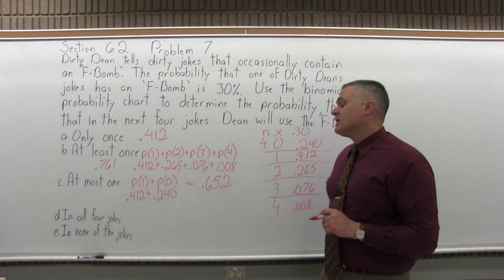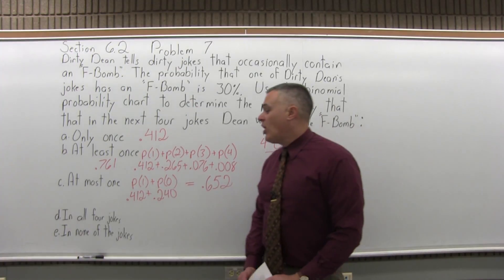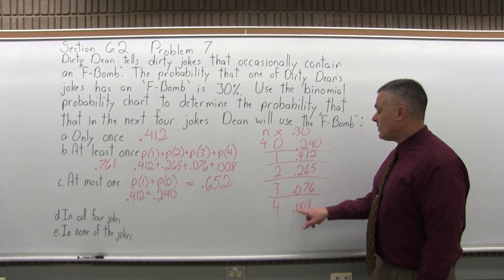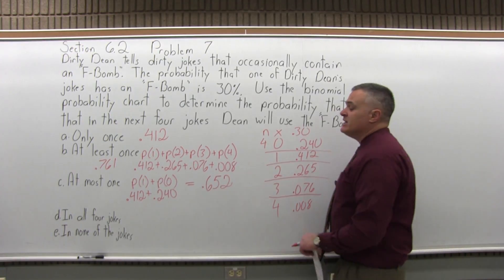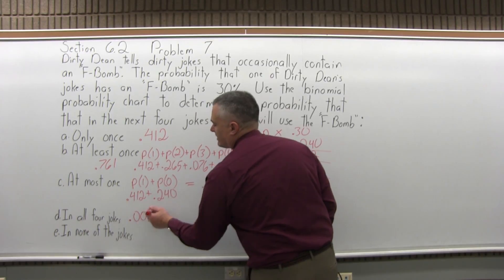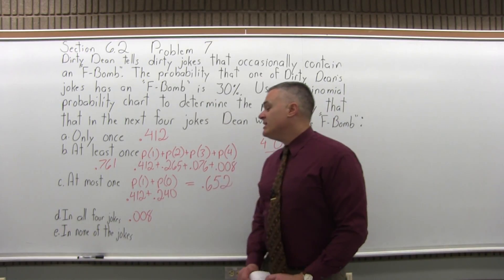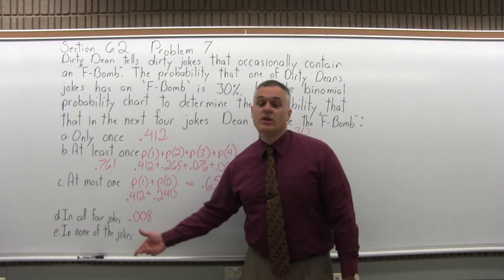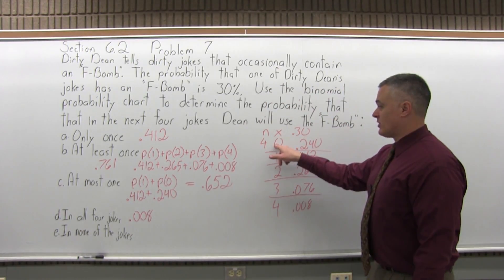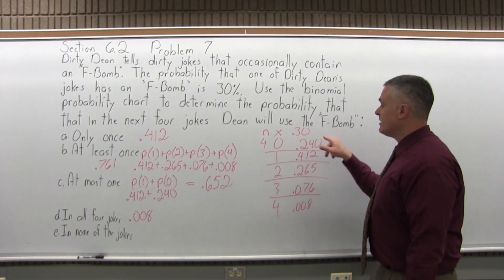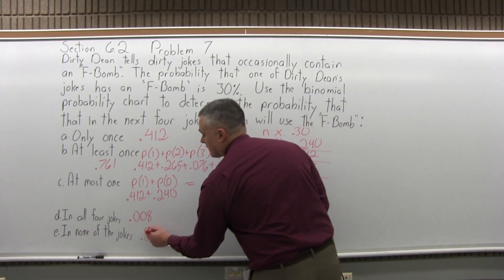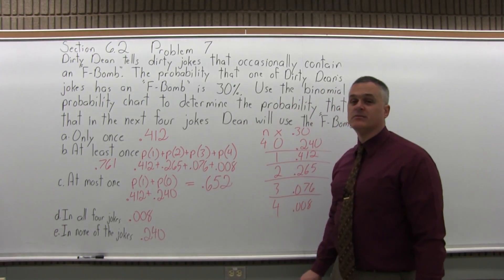What's the probability that the F-bomb shows up in all four of the jokes? That's four out of four, so you go to x equals 4: the probability is 0.008 — a little less than 1%. And then for none of the jokes, that means zero jokes, so go to where x equals 0: the value is 0.240, which is a 24% probability.